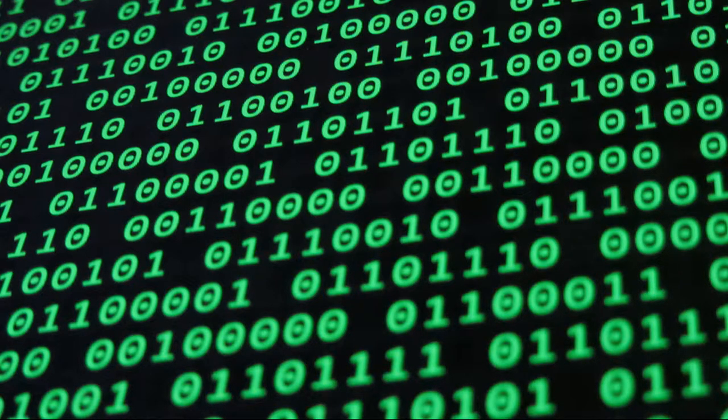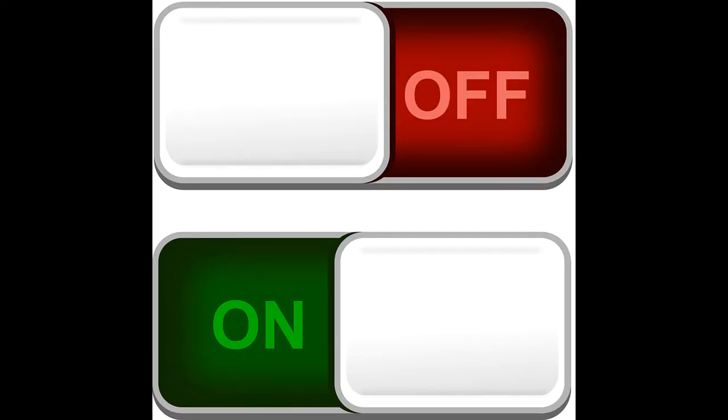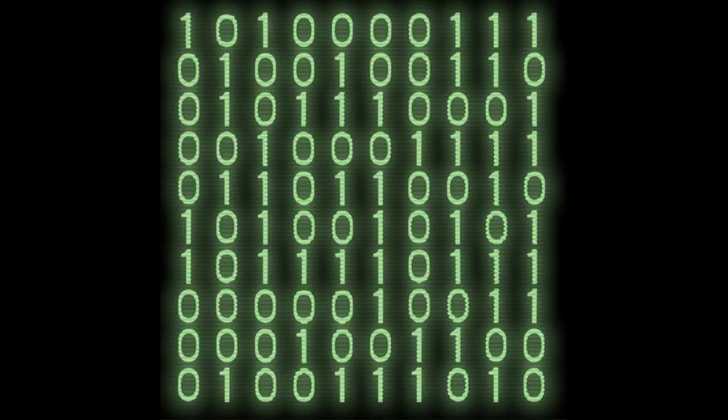Sometimes binary code is also called machine code. It takes into account the fact that computers can really only produce two types of data: on and off. To symbolize this, somebody smartly decided to choose zero for off and one for on. That's it for our binary code—a two-number system, much simpler than our 26-letter alphabet.